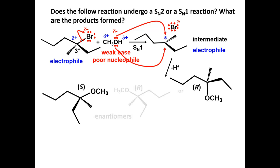We can redraw the R enantiomer as the mirror image. If we assume that there is an equal probability of methanol attacking from either face of the carbocation, the enantiomers will be produced in a 1 to 1 molar ratio to create a racemic mixture. A solution of the products would be optically inactive.